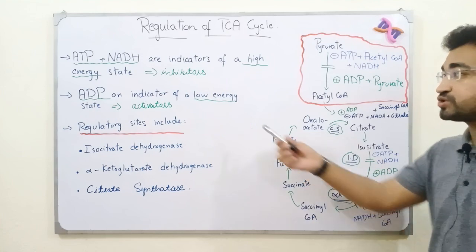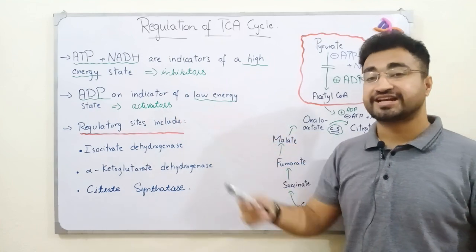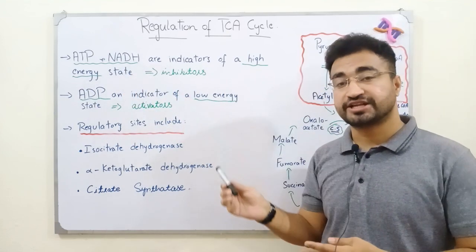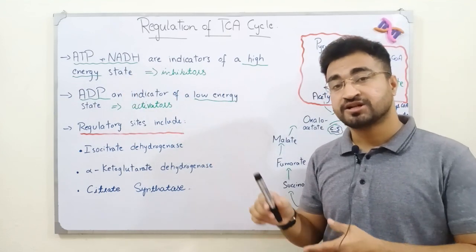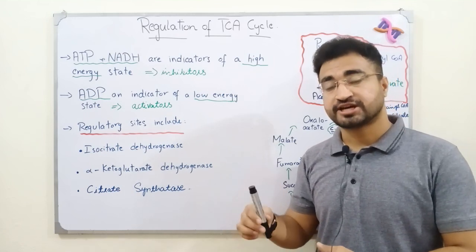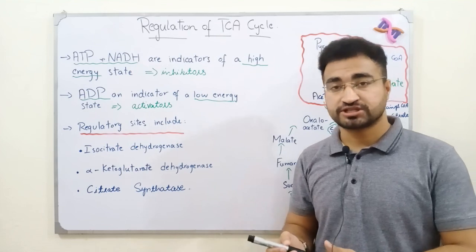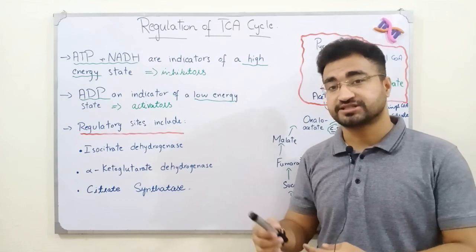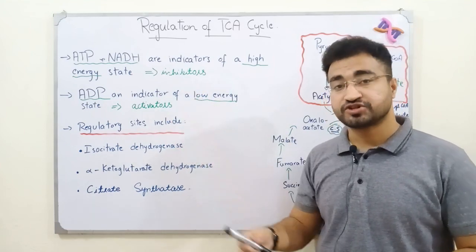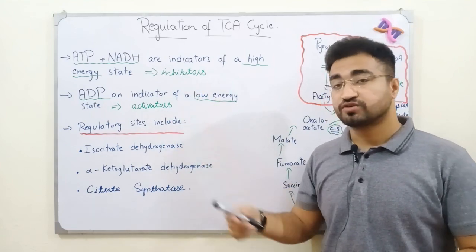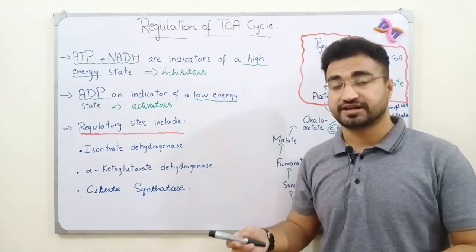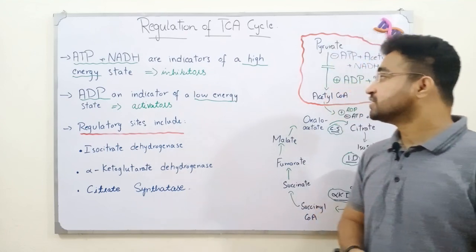You need to remember that ADP and NADH allosterically bind to the regulatory enzymes of TCA, but NADH inhibits those enzymes — it slightly changes their shape so that they cannot properly bind to their substrate and the reactions slow down. ADP, on the other hand, allosterically binds to the regulatory enzymes of TCA and activates them, acting as an activator, because ADP indicates a low energy state.